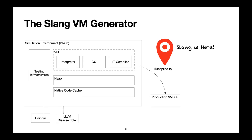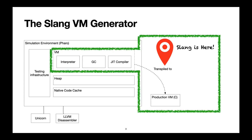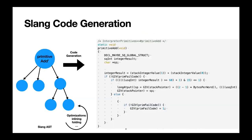What we are going to care about today is Slang. Slang is the thing that transpiles the Pharo virtual machine to C. In particular, we're going to focus on the interpreter. So, how does it work? It's actually a normal compiler — it takes the Pharo source code, gets the intermediate representation, and then generates C code. It does aggressive inlining into the interpreter loop and things like that.